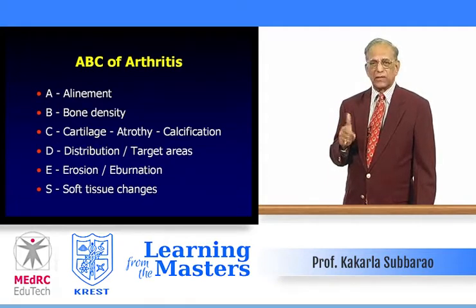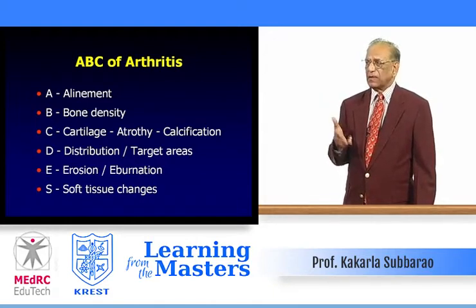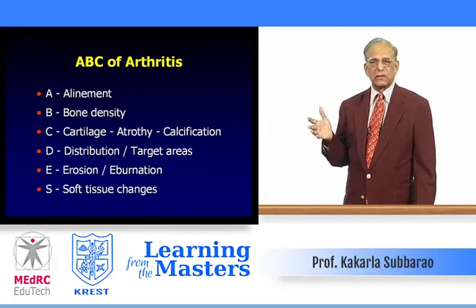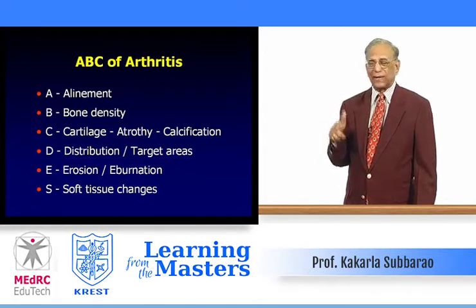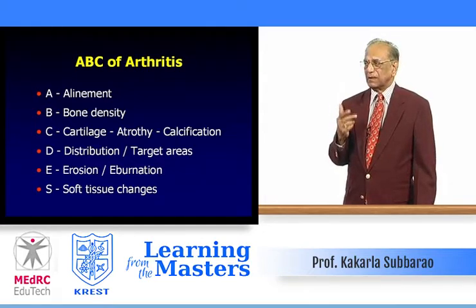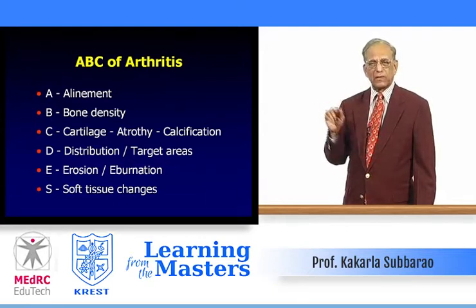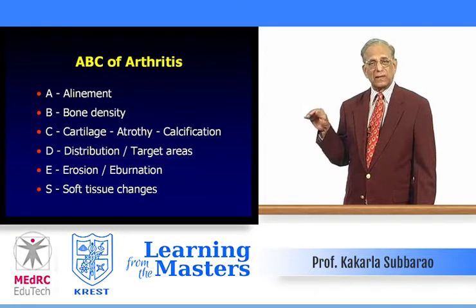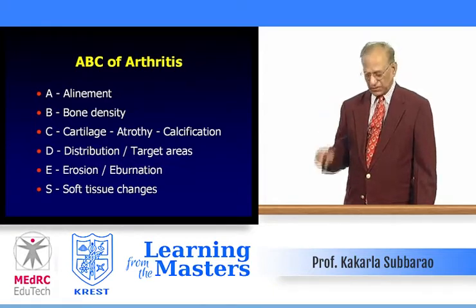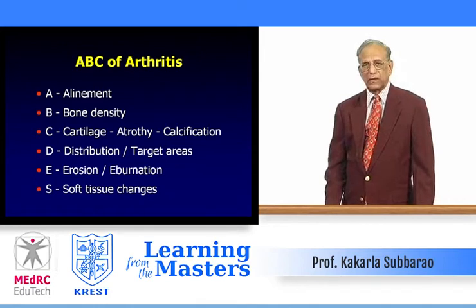C is cartilage — whether atrophied, hypertrophied, or calcified. D is distribution: is the joint disease bilateral symmetrical, unilateral, or involving one ray? E is erosion; E also represents eburnation, which is the opposite of erosion — erosion is a gouged-out defect, eburnation is sclerosis. Additionally, enthesopathy is included, and S represents soft tissue changes.